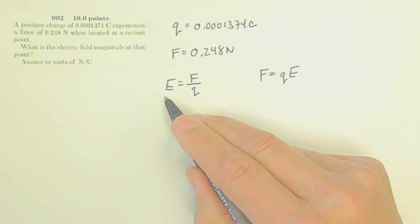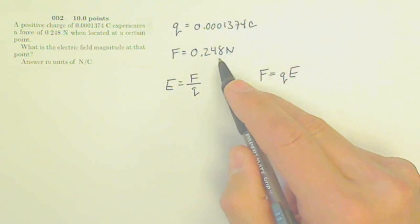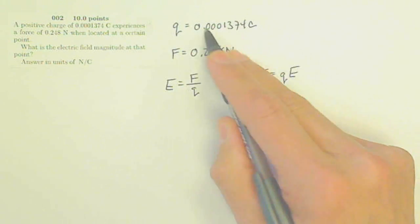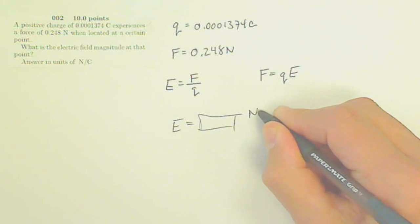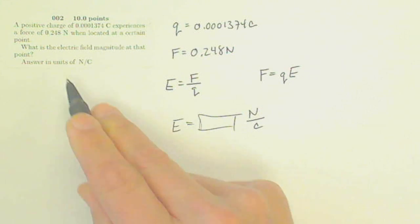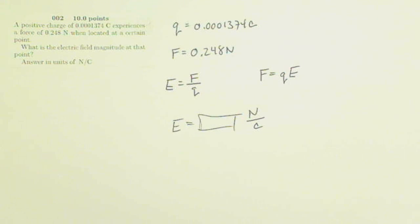So I'm looking for the electric field, and I have my force in newtons and I have my charge in coulombs, so I'm going to take my newtons and divide it by my coulombs, and I will get my electric field strength in newtons per coulomb. That's the good units I have from my force in newtons divided by my charge in coulombs.